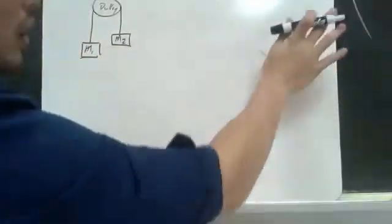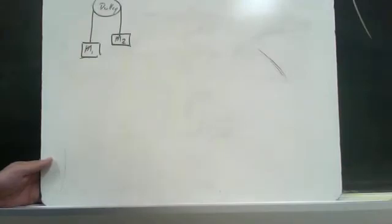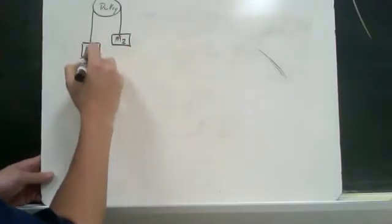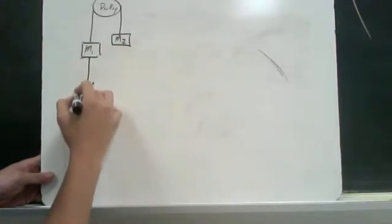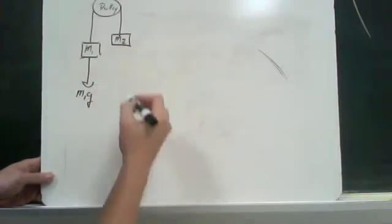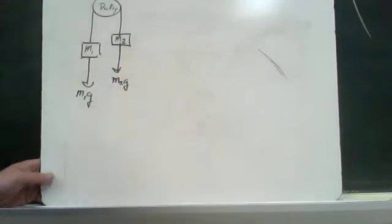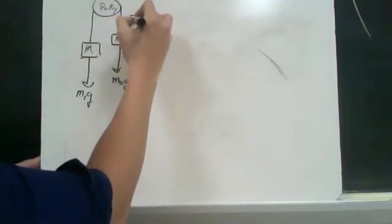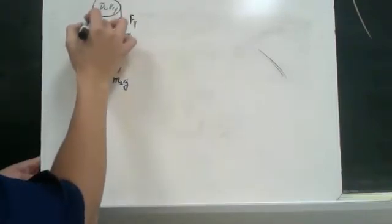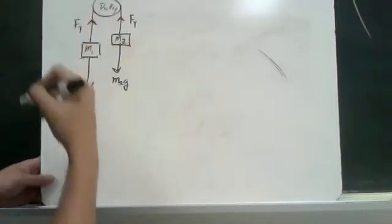So first things off, I want us to create a free body diagram for each of these masses. So the first thing, we have mass 1 going down with the force of gravity, and we have the weight of mass 2 going down with the force of gravity. We have the force of tension in the string there, and we have the same string over here with the same force.